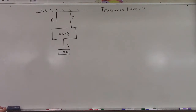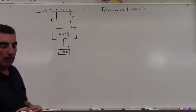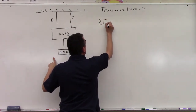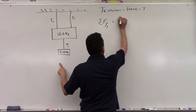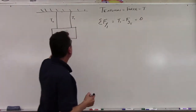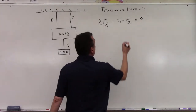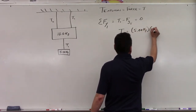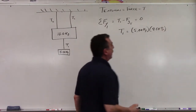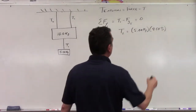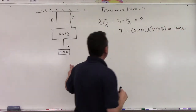Let's find T1 and T2. The sum of forces for the bottom subsystem: T1 minus Fg sub 5 equals zero, because the system is attached to the ceiling and not moving. T1 equals 5.00 kilograms times 9.80 meters per second squared, which we established equals 49 newtons. Because we added two upper cords, the tension in the lower cord doesn't change.